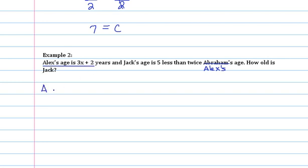They tell us the first part of the sentence tells us that Alex is 3x plus 2. So we can call that A. So A is equal to 3x plus 2. Remember, the word 'is' means equals. Let's look at Jack here.